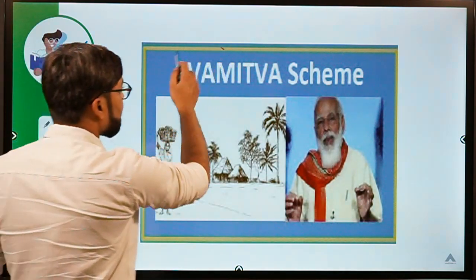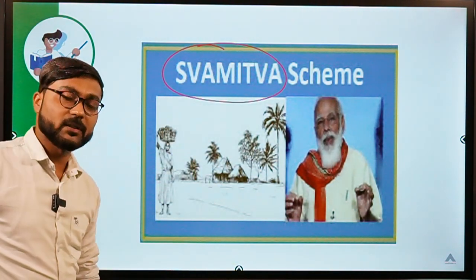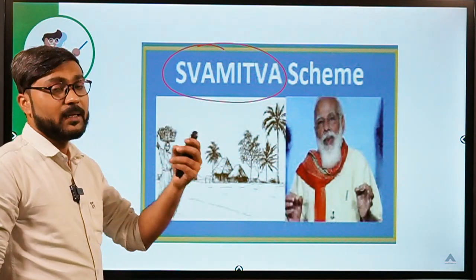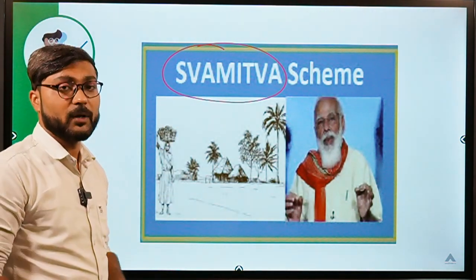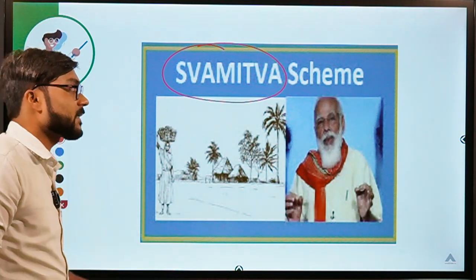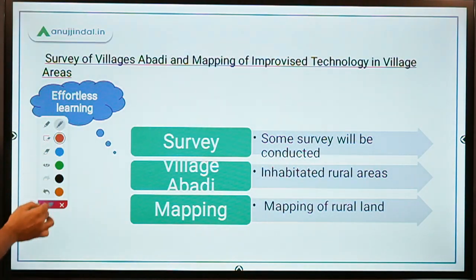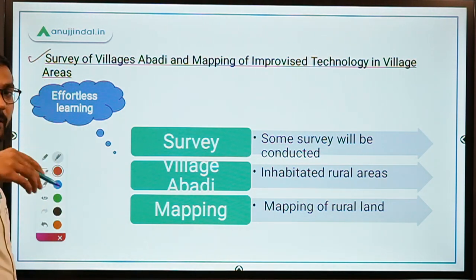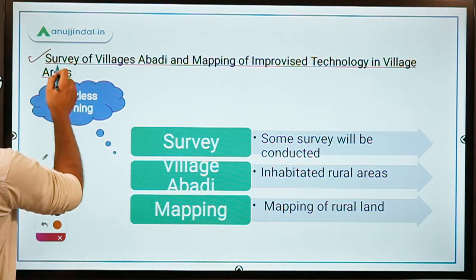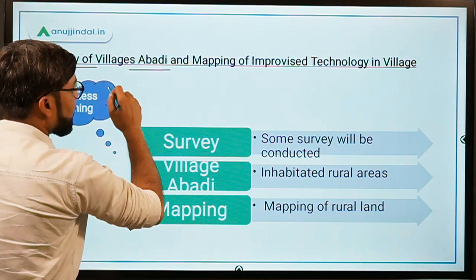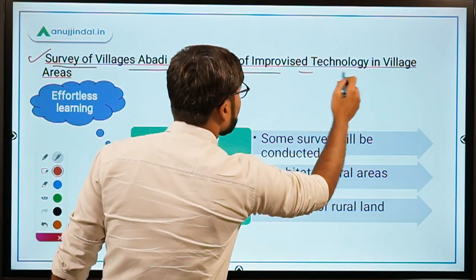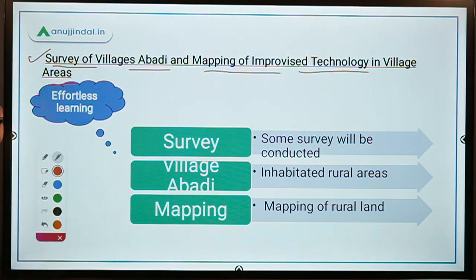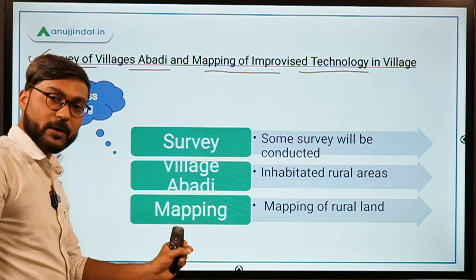The scheme we are going to discuss today is the SVAMITVA scheme, which was recently in news because the Prime Minister launched the physical distribution of property cards under this scheme. Let us discuss the scheme and simplify its objective. The full form is: Survey of Villages Abadi and Mapping with Improvised Technology in Village Areas.